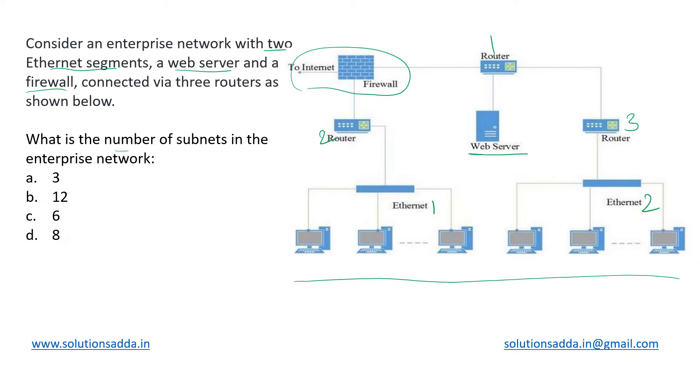We want to find out the number of subnets in this enterprise network. So basically subnets are created using a router. We know that it creates the logical division of a network based upon the IP addresses.